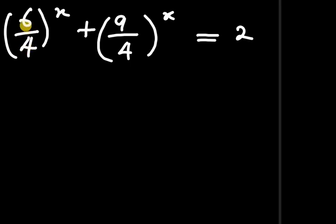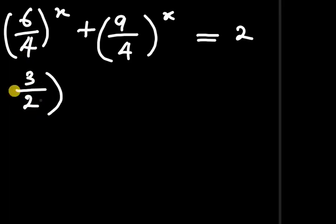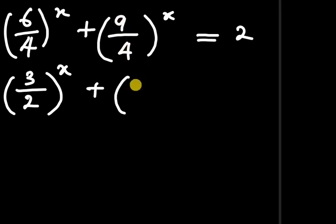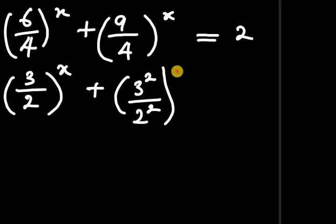Now, 6 divided by 4 can be reduced to lower terms by dividing both numerator and denominator by 2. So 2 divides 6 gives 3, and 2 divides 4 gives 2, all to the power of x, plus. For 9 divided by 4, we can write this as 3 to the power of 2 divided by 2 to the power of 2, all to the power of x, equals to 2.